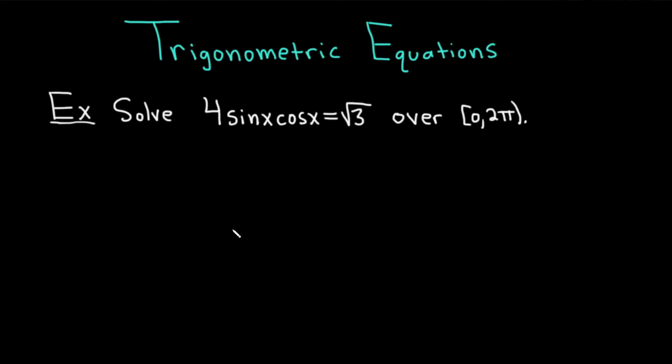Hi, everyone. It's the Mathsorcerer here with Chegg. In this video, we're going to discuss trigonometric equations. Let's go ahead and work through this example. Directions say to solve 4sin(x)cos(x) equals the square root of 3 over the interval 0 to 2π. Let's work through it.